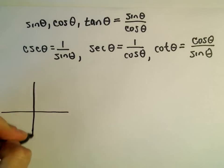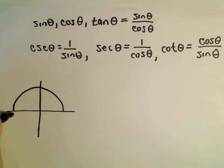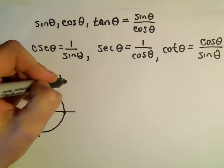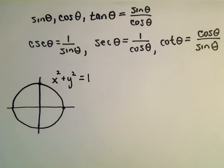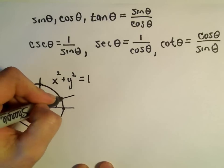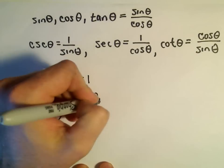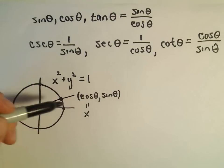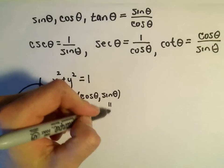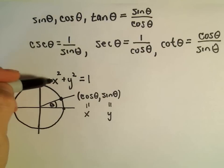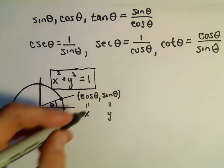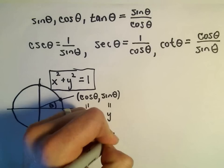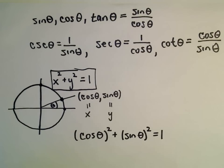The most basic identity that people tend to remember is sine squared plus cosine squared equals 1. The idea comes from the equation for the unit circle: x squared plus y squared equals 1. For some angle theta, the point on the unit circle is (cosine theta, sine theta). So the x-coordinate is cosine theta and the y-coordinate is sine theta. We plug those into the circle equation to get cosine squared theta plus sine squared theta equals 1.